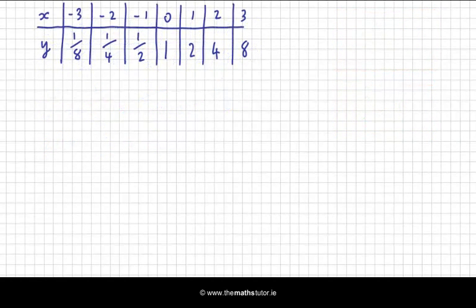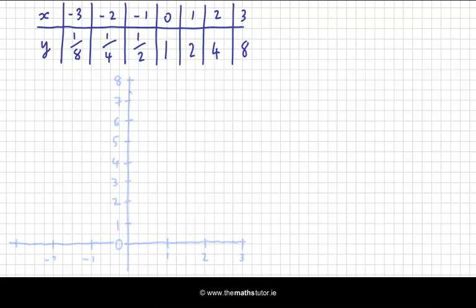So here's my table, and now I want to draw my graph. Remember, my domain goes from minus 3 up to 3, and my range from 1 eighth up to 8. So I need to go as high as 8. So when x is minus 3, here's my x-axis. This is my y-axis.